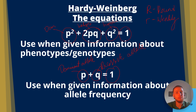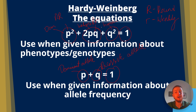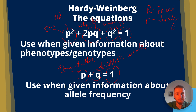P squared would mean big R, big R — the genotype with the dominant characteristic expressed in the homozygous condition. 2PQ would be big R, little r, because it's heterozygous — it still expresses the round phenotype. Q squared would be homozygous recessive: little r, little r. In the P plus Q equation, P represents all the dominant alleles in the population and Q represents all the recessive alleles.